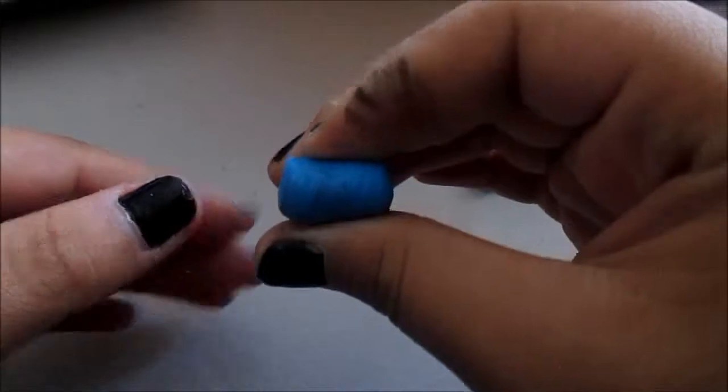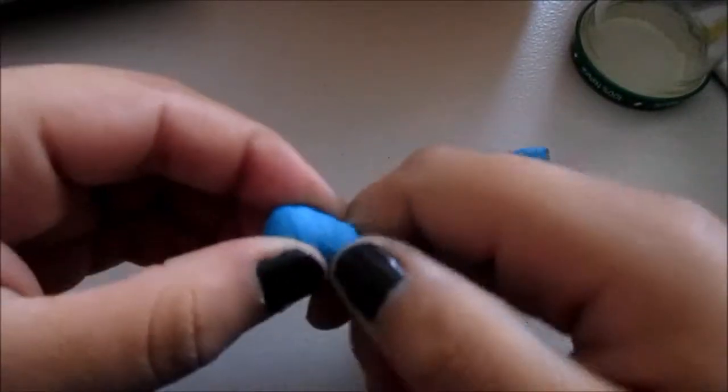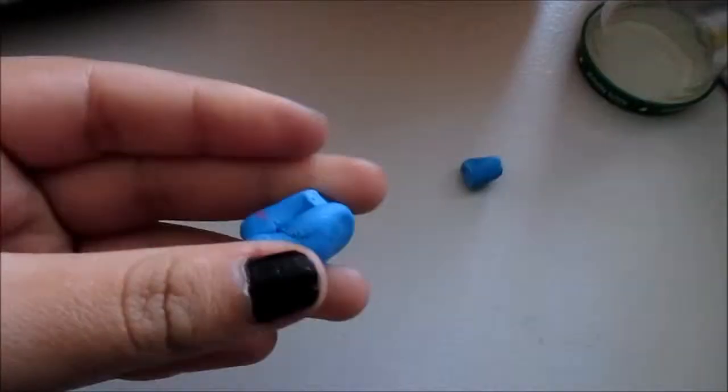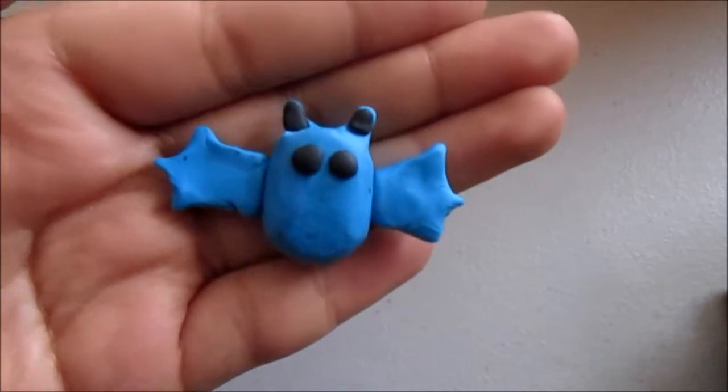And you roll it up. I am making a bat for my snow globe. Just try your best to make your polymer clay into whatever shape you're trying to make. This is how my bat came out.